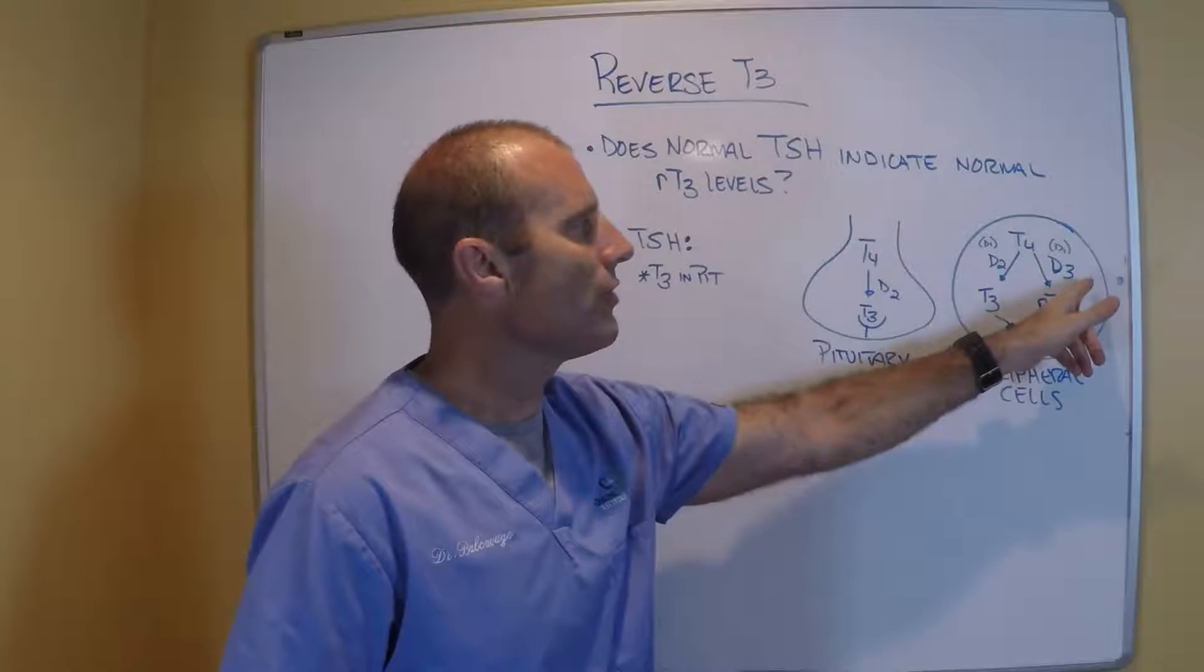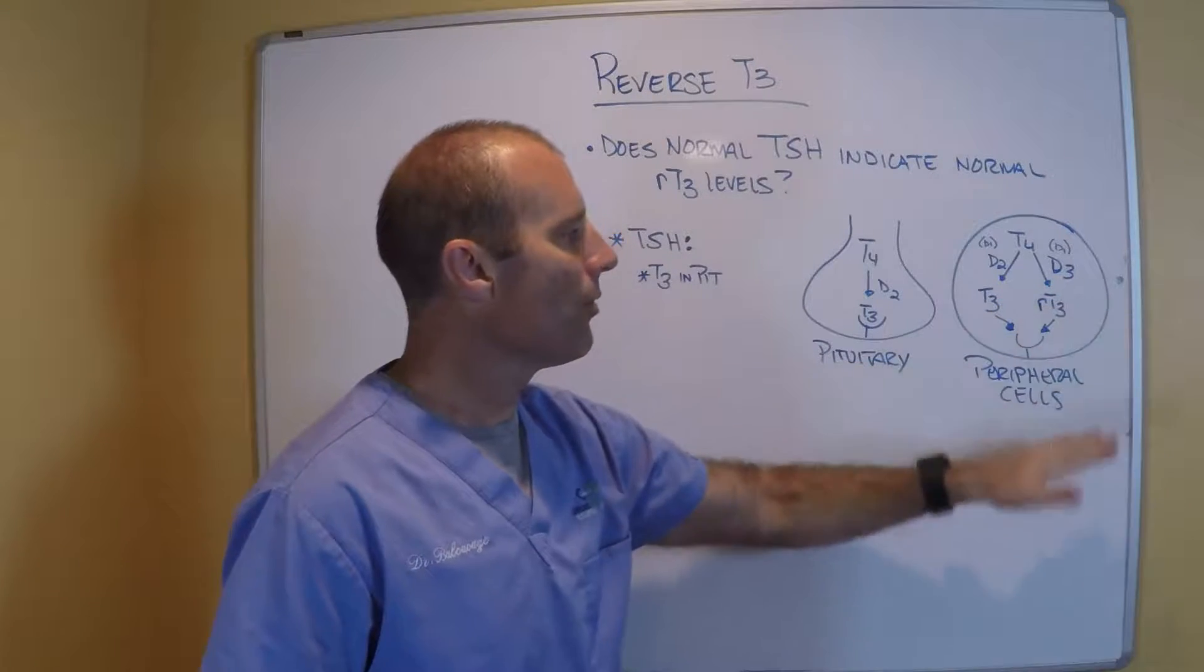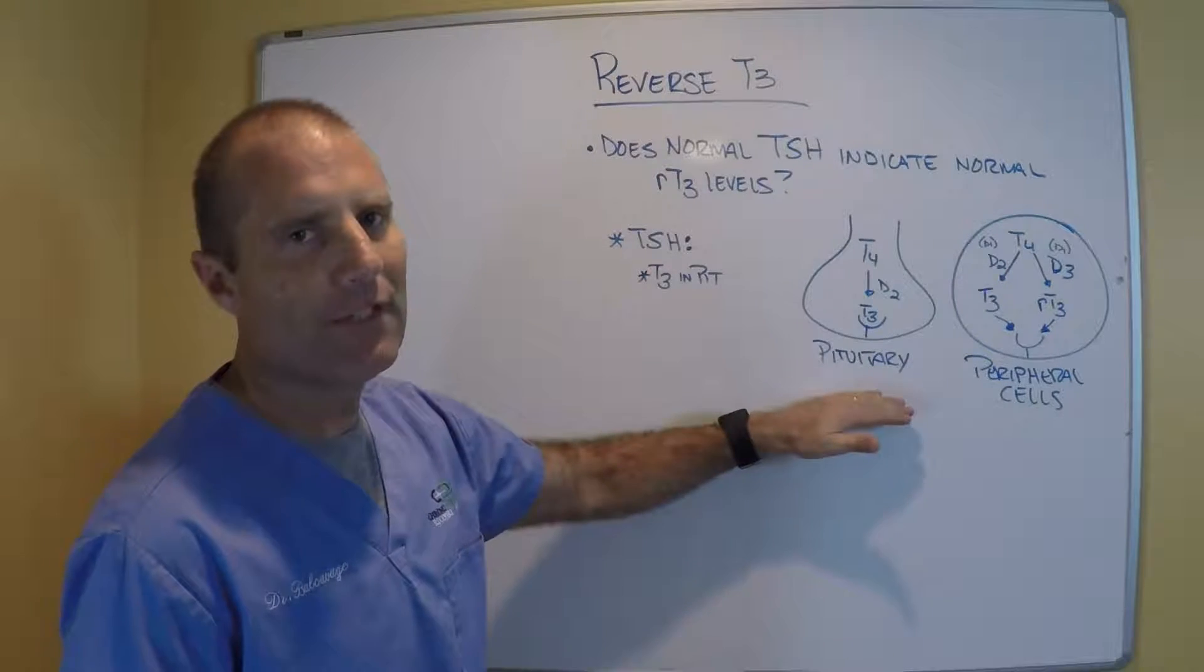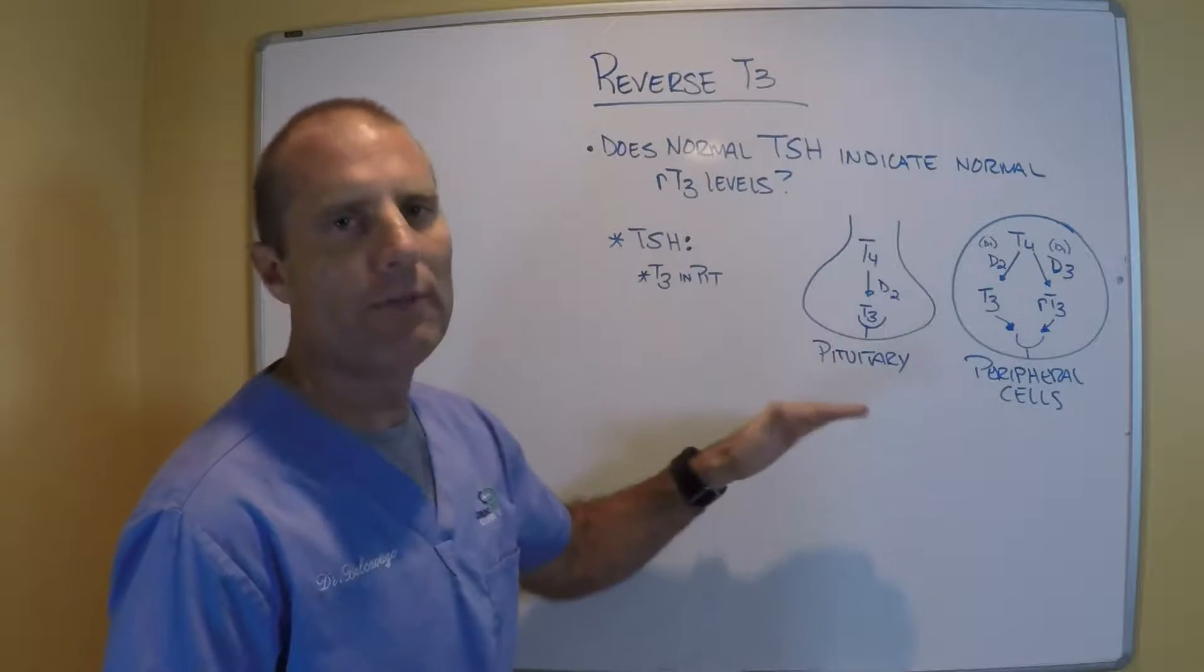Under situations that drive up D3, the peripheral cells will be impacted. The pituitary gland does not have D3, so it can only make T3.